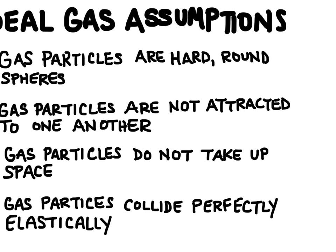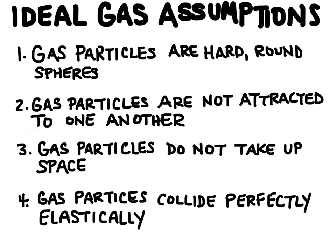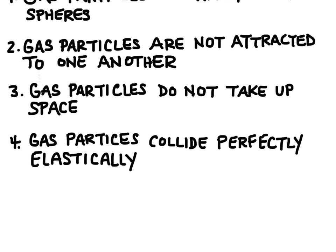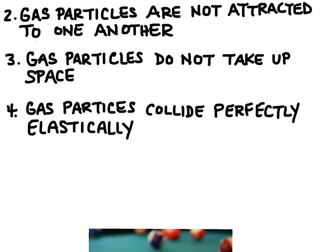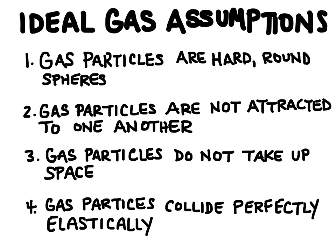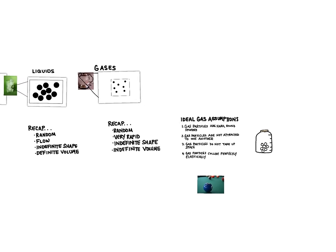The last assumption is that gas particles collide perfectly elastically. A perfectly elastic collision means the particles collide with each other and transfer their kinetic energy between each other, so the motion is continual and forever. It's almost like hitting a cue ball to break billiard balls, and the balls just never stopped — they kept transferring their energy perfectly between each other indefinitely. These assumptions are going to guide our understanding in the next lessons as we explore gases further. And that is kinetic molecular theory.